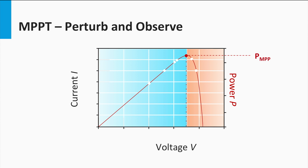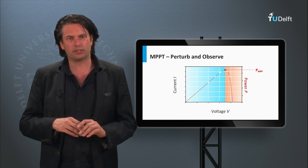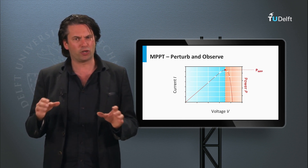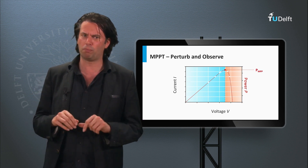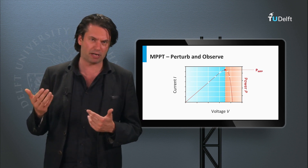In this way the algorithm converges towards the MPP over several perturbations. You would have noticed that this algorithm takes advantage of the fact that the PV curve has an increasing nature to the left of the MPP and a decreasing nature to the right of the MPP. The problem with this algorithm is that the operating point is never steady at the MPP — it is always hovering around the MPP region, although this could be minimized using very small perturbation steps.